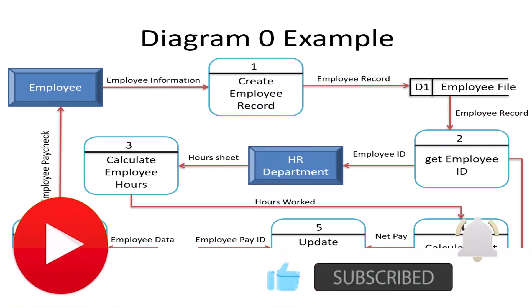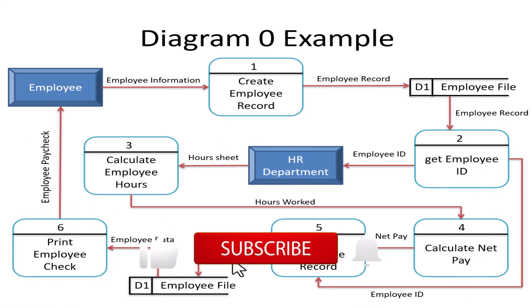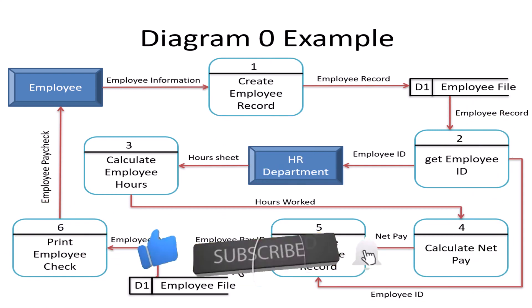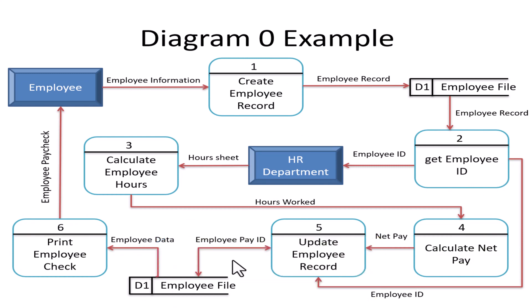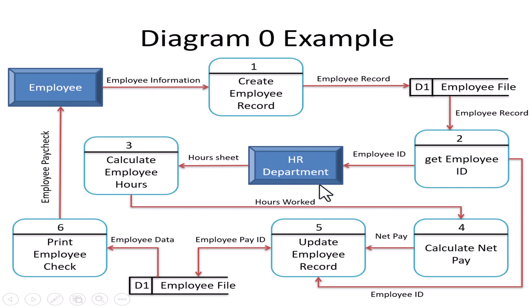Problem 1: the number of processes cannot exceed nine. Problem 2: an external entity cannot directly deal with another external entity — if you want two external entities to communicate, it must go through a process. Problem 3: a data store cannot directly deal with an external entity or another data store — it must also go through a process.